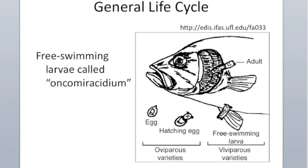Monogenian life cycles are simple but have a couple of variations. Adults living on the host can be oviparous — egg-bearing — producing eggs that either sink to the bottom and hatch into free-swimming larvae called oncomiracidia, which seek a new host, or are anchored to the fish by little strings and hatch directly on the fish. Viviparous, or live-bearing, varieties give birth to offspring that are essentially mini-adults with no external egg stage.